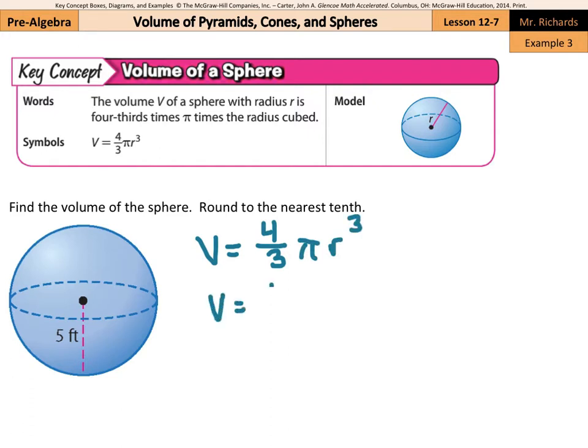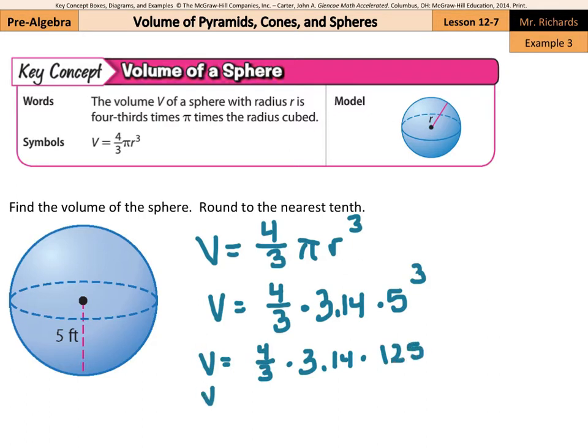Volume equals four-thirds pi r to the third power. So volume is going to be four-thirds times 3.14 times 5 to the third. Four-thirds times 3.14, 5 to the third power is not 5 times 3, it's 5 times 5 times 5, which is 125. I'm going to keep the four-thirds for a moment and just multiply the 125 by 3.14 to get 392.5.